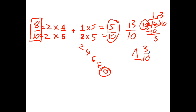So the steps again real fast: find the LCM, change the denominators, add them up, and then simplify — because it's either going to be an improper fraction or it may be a fraction where I'm just simplifying.